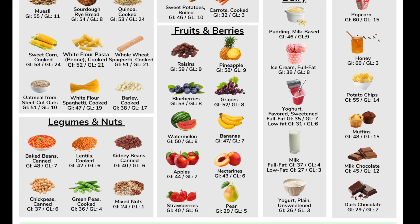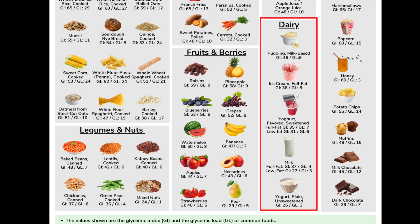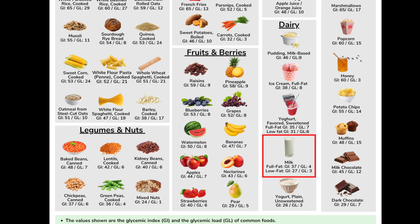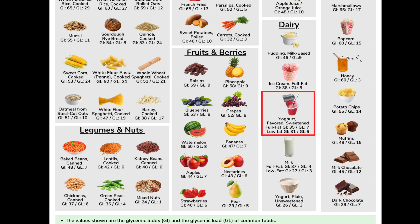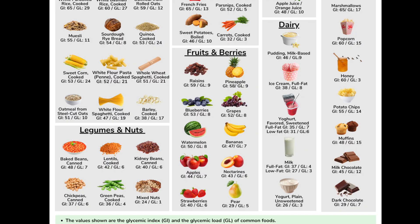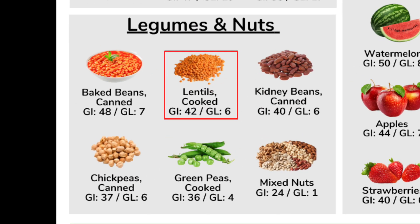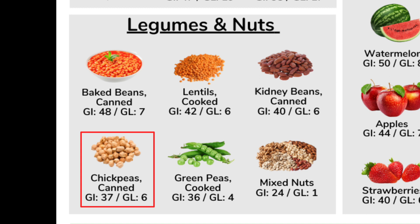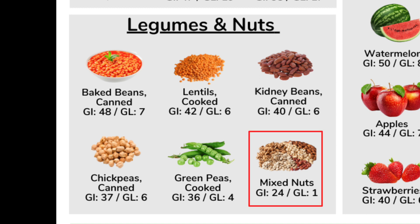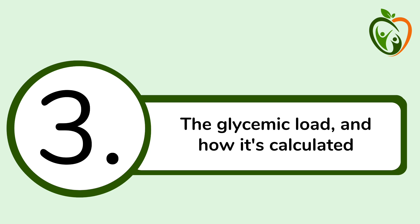Consistently relatively low glycemic index values can be found among dairy foods and legumes and nuts. Low-fat milk has a glycemic index of 27, plain yogurt of 26, and even flavored and sweetened commercial yogurt is not that high at 31 for low-fat and 35 for full-fat. Even full-fat ice cream has a glycemic index of only 38 — a good reminder that a fairly low glycemic index does not mean a food is a health food. Lentils come in at 42, kidney beans at 40, chickpeas at 37, and mixed nuts at 24.